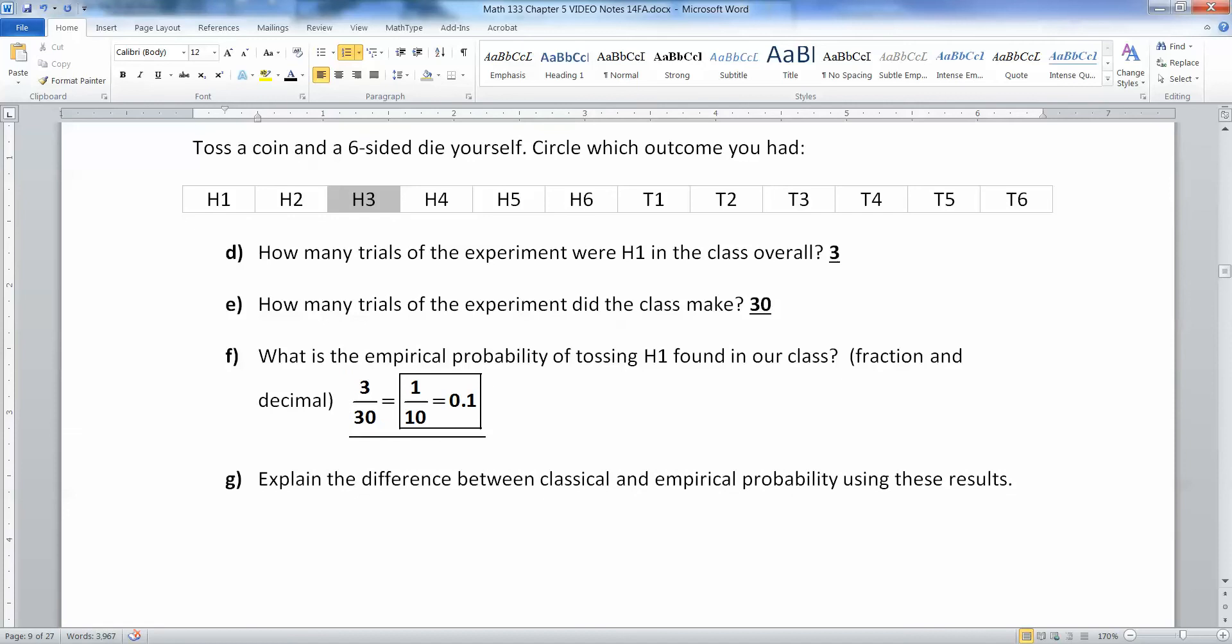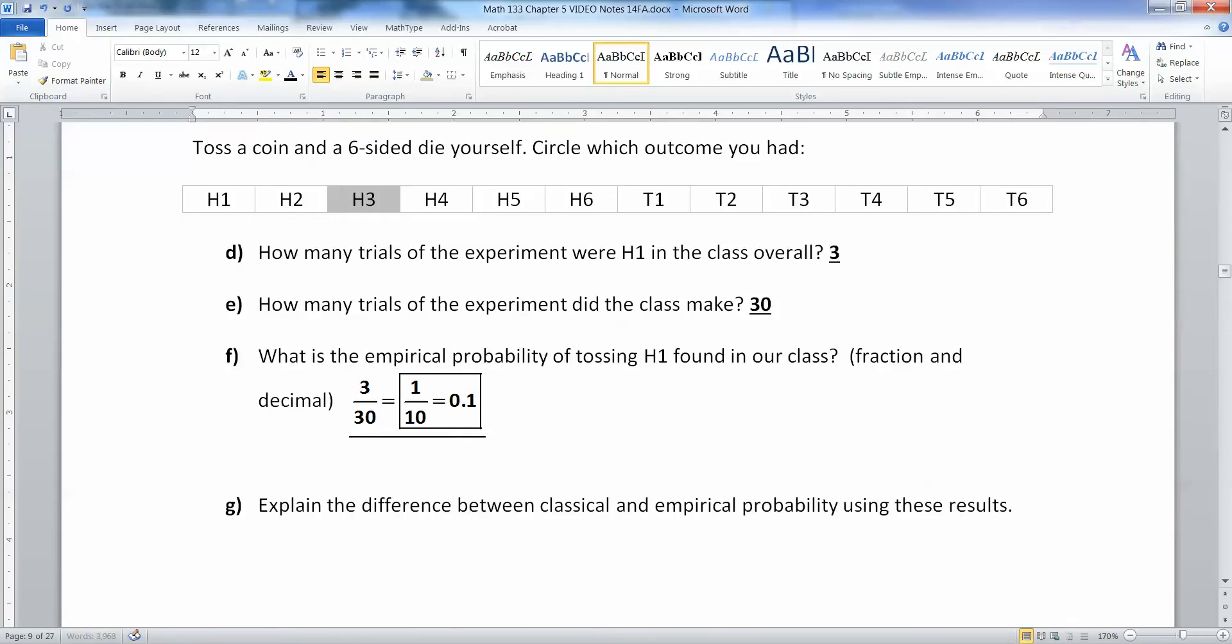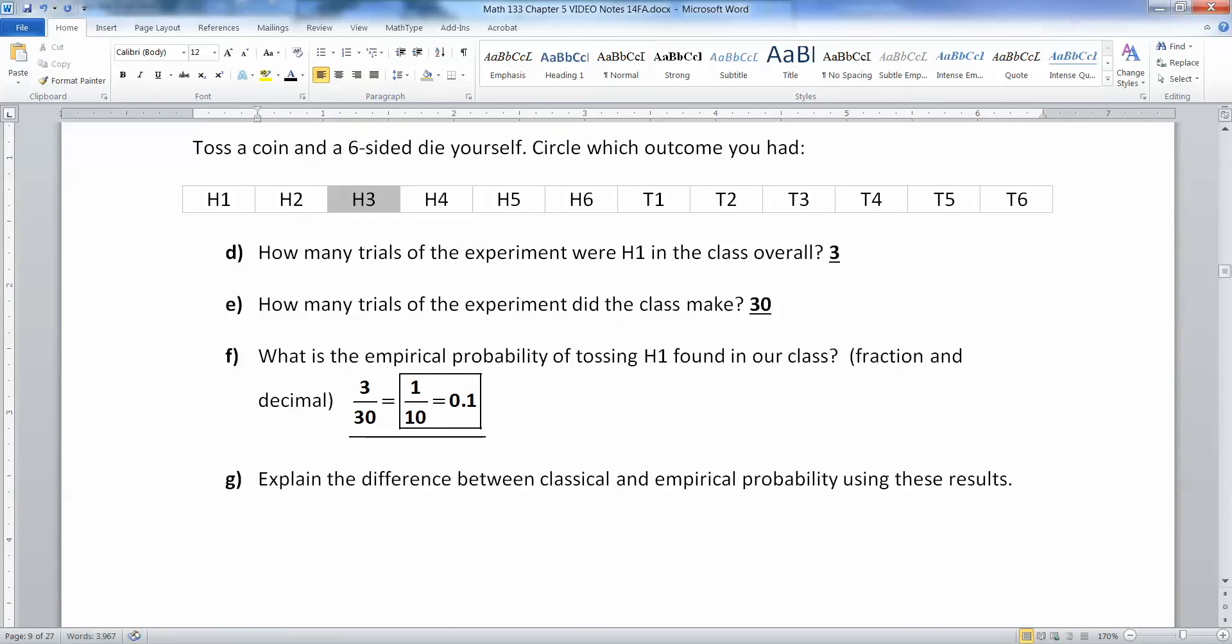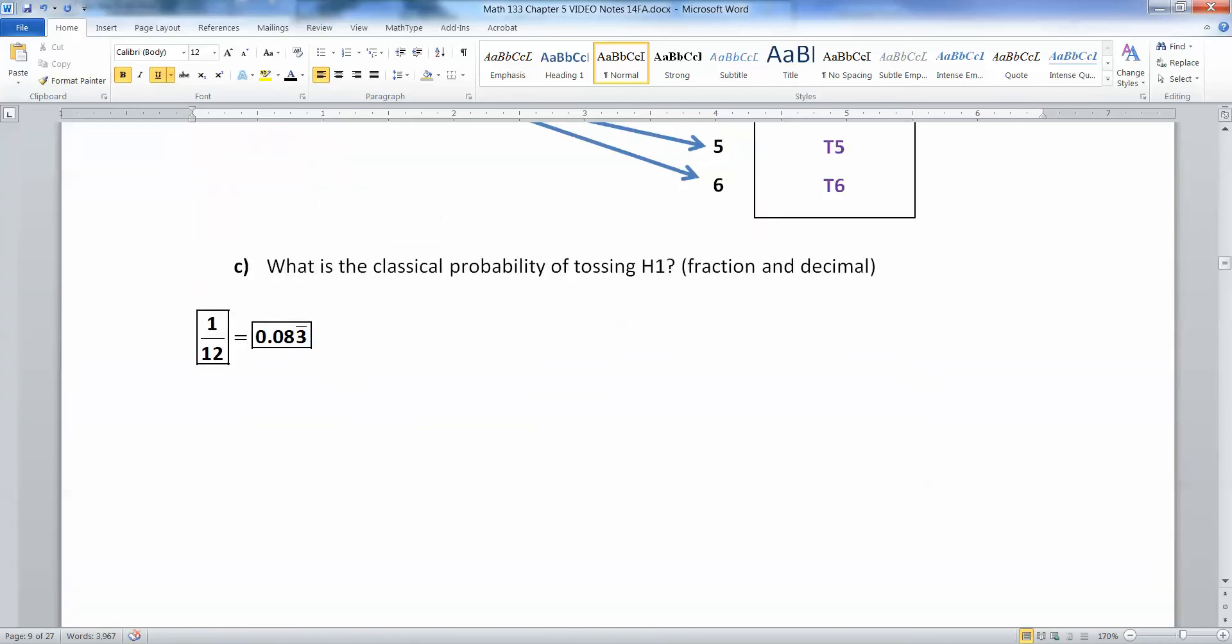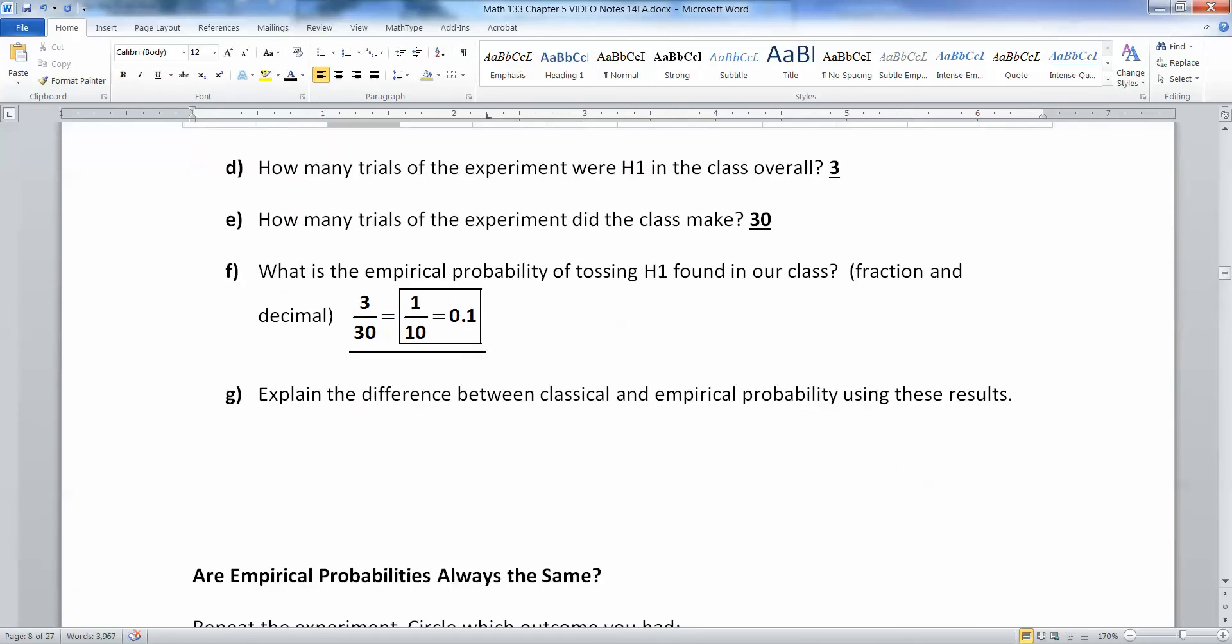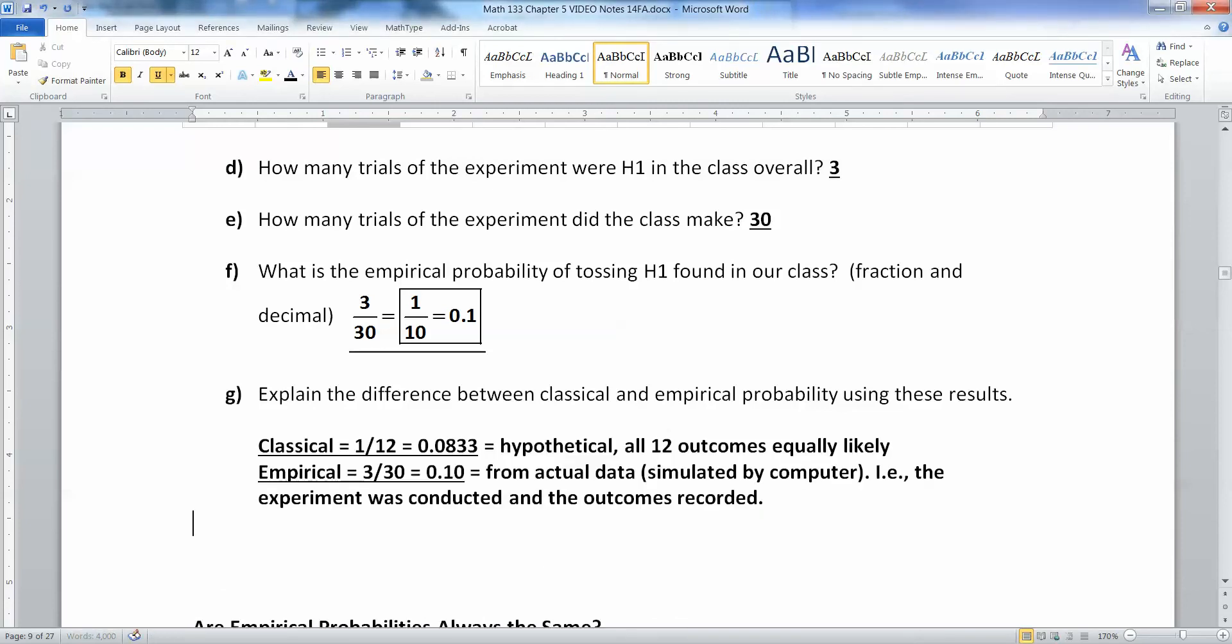Now explain the difference between the classical and the empirical probabilities. So we said in the previous page that it was 1 out of 12, 0.083. But when we actually do it, we got 1 out of 10, 0.1. And I've actually done this with many classes. So what's the difference? Well, the classical is kind of like your hypothetical. It's 1 out of 12, 0.083. You assume that all 12 of the outcomes are equally likely.